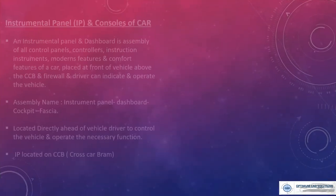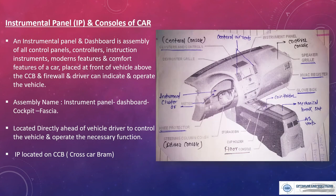Next is the instrument panel or console of a car. An instrument panel or dashboard is an assembly of all control panels, controllers, instruments, modern features, and comfort features of a car. It is placed at the front of a vehicle above the CCB and firewall, in front of the driver, so the driver can monitor and operate the vehicle. It is known by different names: instrument panel, dashboard, cockpit, fascia, etc. It is located ahead of the vehicle driver to control the vehicle and operate the necessary functions.